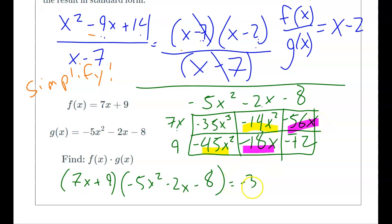I'm going to write it in standard form, which means my biggest exponent comes first. -35x³, and then -59x², and then -74x - 72.